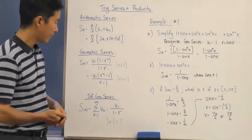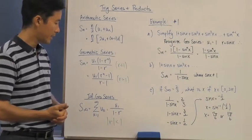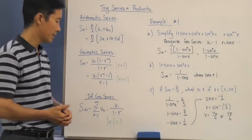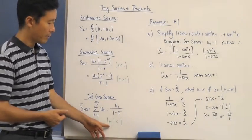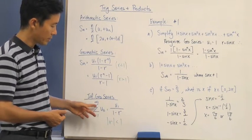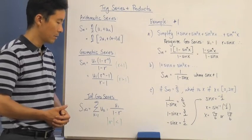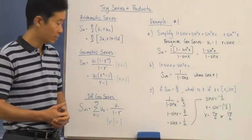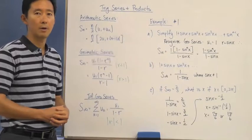Now remember also that if we wanted to find the infinite geometric series, so long as our absolute value of r was less than 1, we could say that the sum from k equals 1 to infinity of u sub k would simply be u sub 1 divided by 1 minus r.